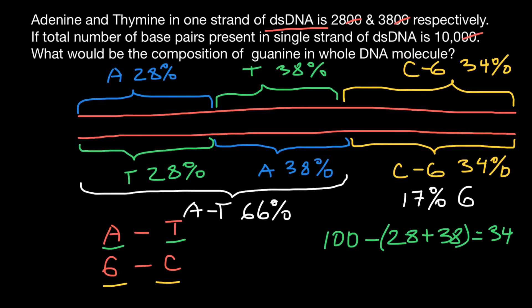To summarize: if you want the adenine content of the double-stranded DNA, it's 28% plus 38% divided by 2 = 33%. Thymine content is also 28 plus 38 = 66 divided by 2 = 33%. Adenine: 33%, thymine: 33%. Guanine is half of 34% = 17%, and cytosine is also 17%.